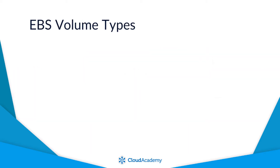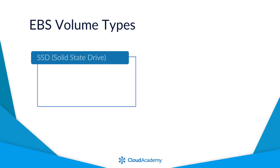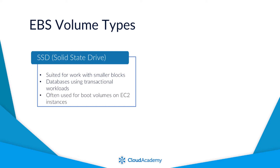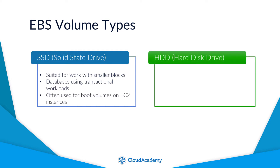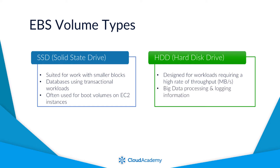There are two types of EBS volumes available, each with their own characteristics. These being SSD-backed storage — solid state drive — and HDD-backed storage — hard disk drive. This allows you to optimise your storage to fit your requirements from a cost-to-performance perspective. SSD-backed storage is better suited for scenarios that work with smaller blocks, such as databases using transactional workloads, or often as boot volumes for your EC2 instances. Whereas HDD-backed volumes are designed for workloads that require a higher rate of throughput in megabits per second, such as processing big data and logging information — essentially working with larger blocks of data.